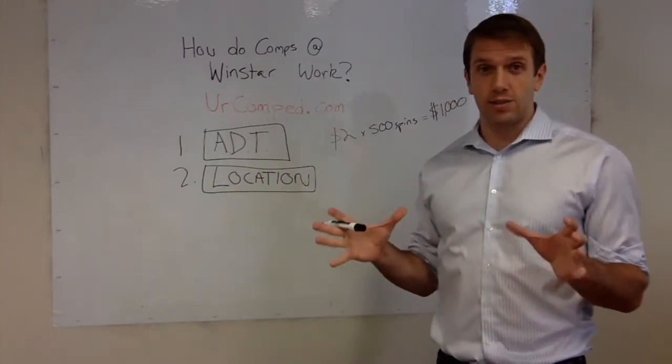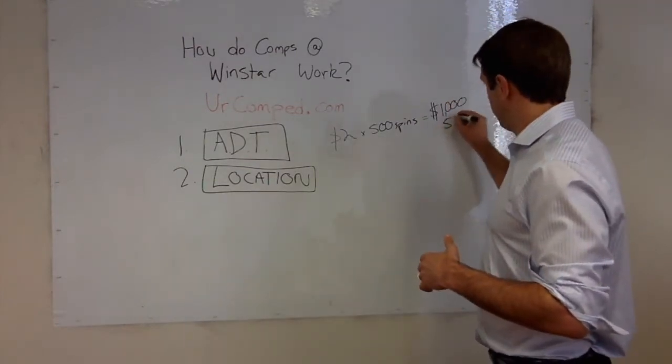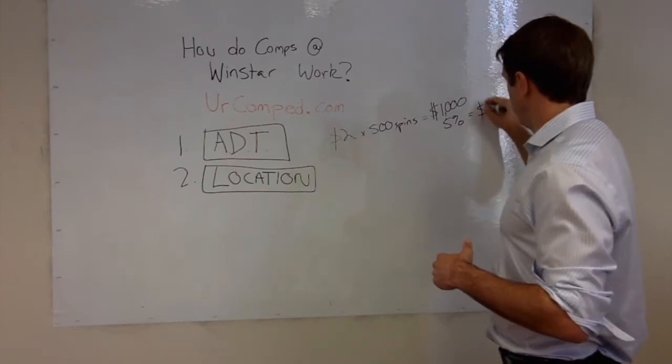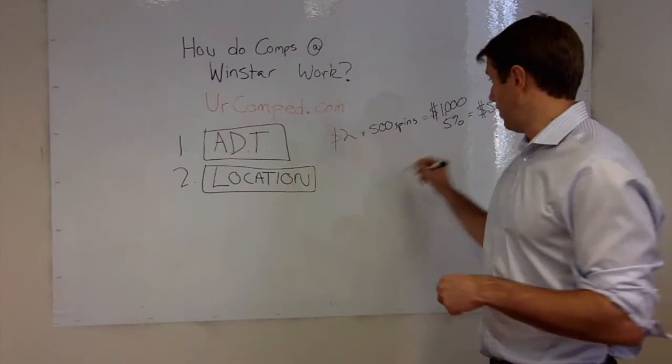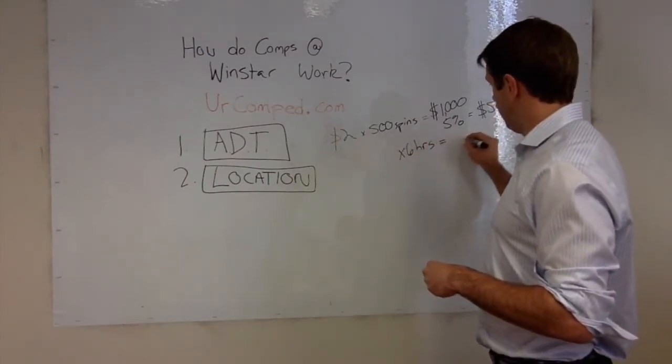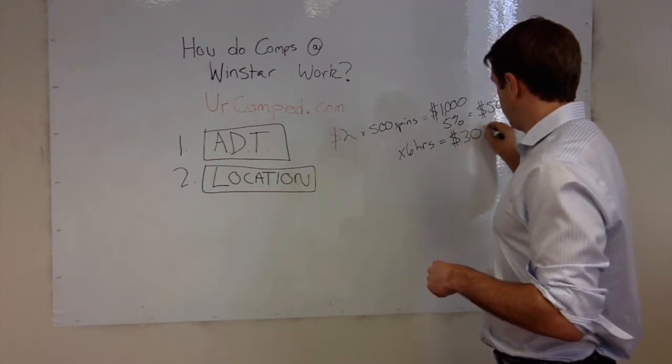Now let's say the odds, or the edge on that slot machine for the casino, is 5%. Then your theoretical value is $50 per hour. And if you typically play for 6 hours, then your total theoretical for that day is $300.